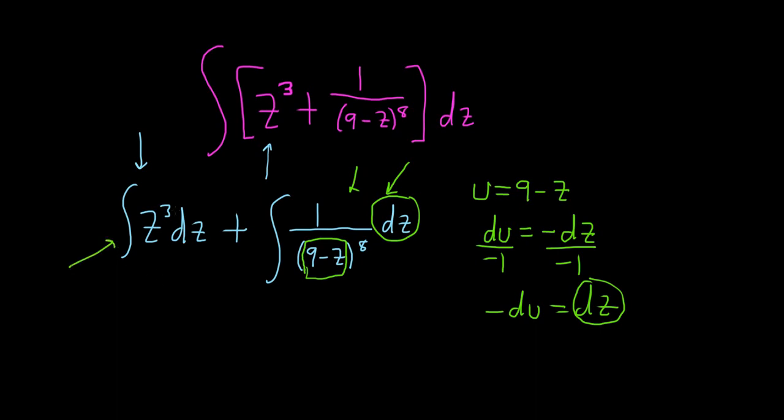I'm going to go ahead and integrate this piece. This is just a power rule. So you add 1. So you'll get z to the 4 over 4. So you add 1 and divide by the result. So 3 plus 1 is 4, and then you divide by 4.